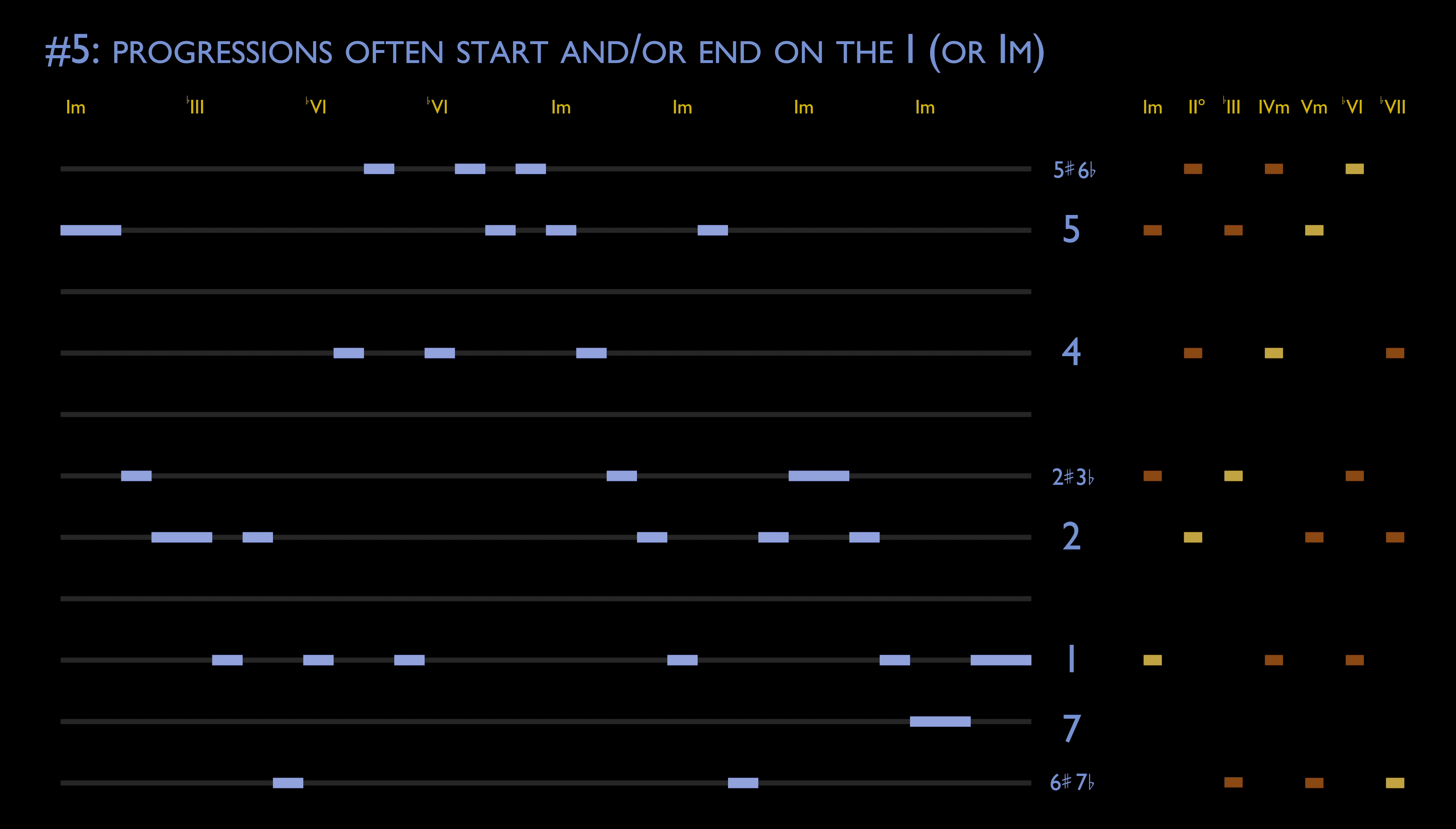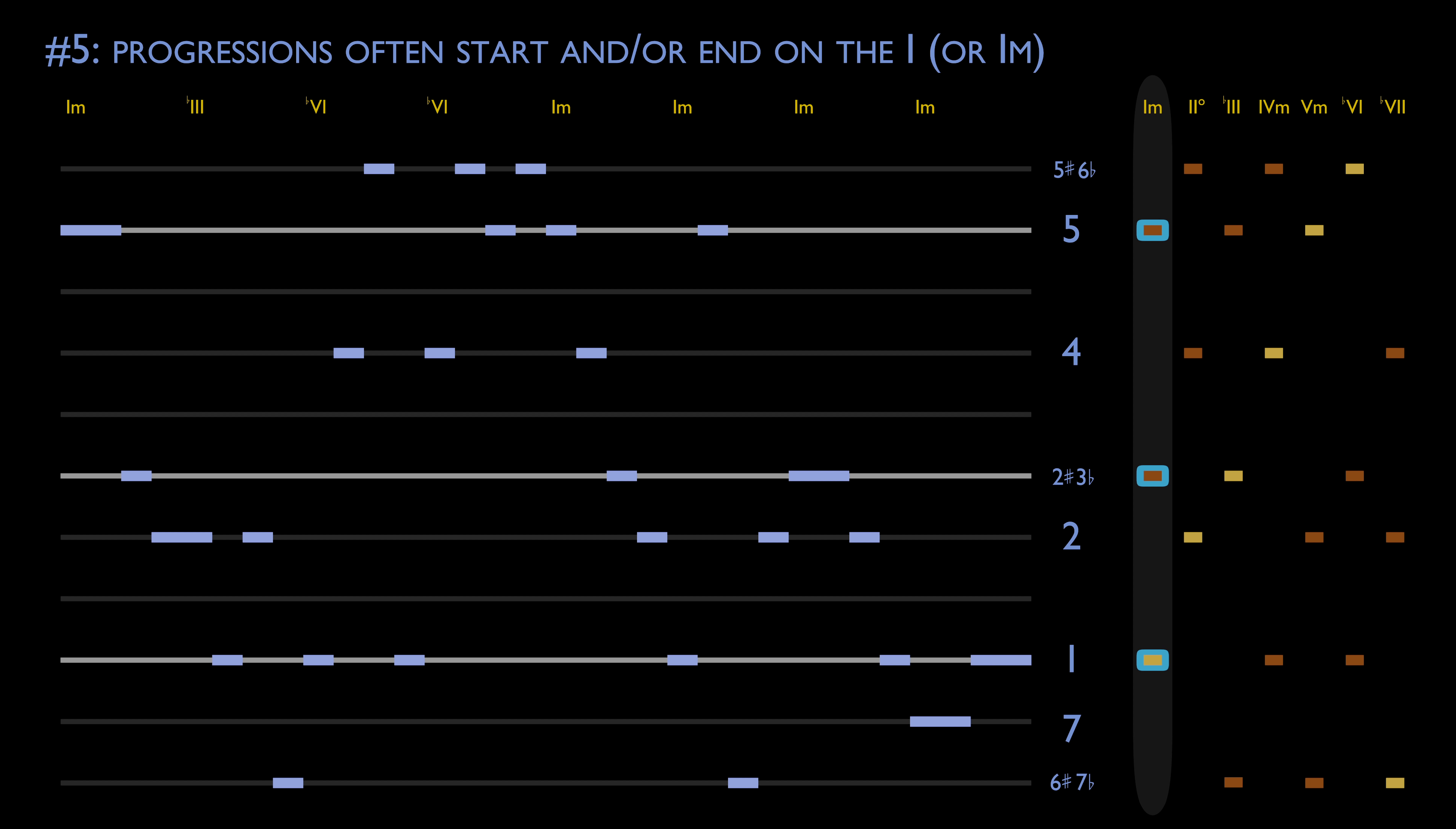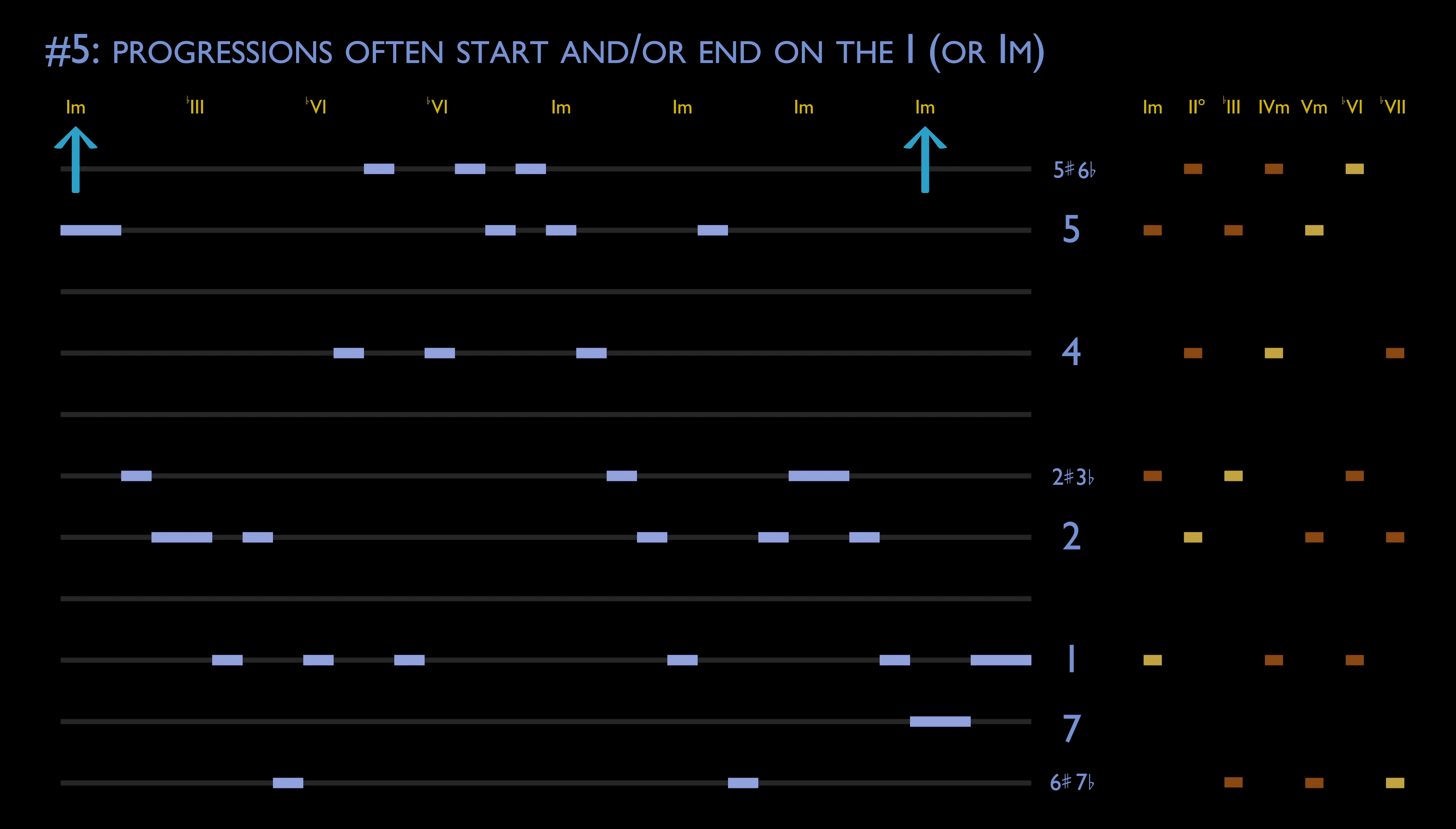Number five: Progressions often start and/or end on the I chord. Just as the tonic often acts as the home of the scale and can lend a sense of closure to the melody, the chord based off that note has a similar function. The I chord, or I minor in the case of this melody, is indeed the first and last chord in our progression.